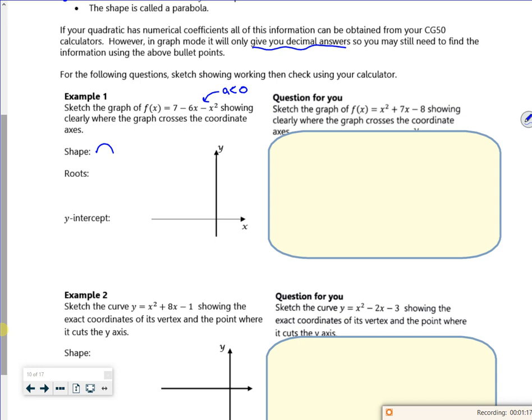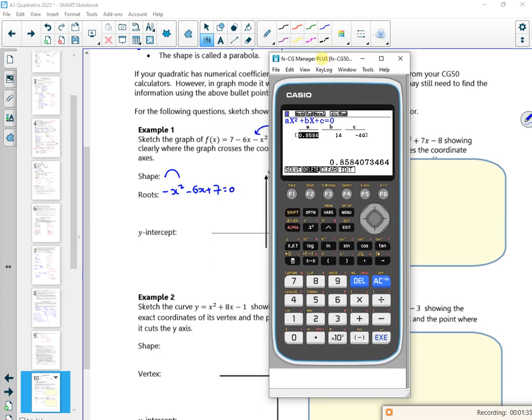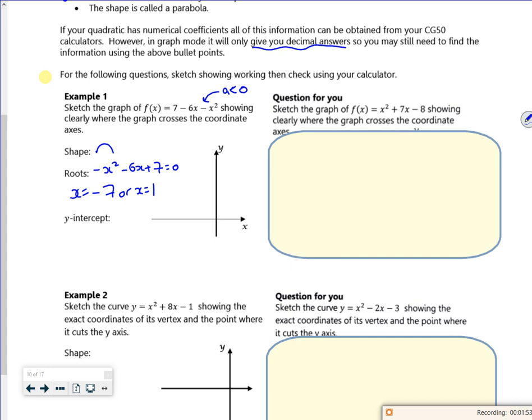In terms of the roots, if I think of it as -x² - 6x + 7 = 0, let's find it on the calculator. So minus 1, minus 6, 7. That gives us roots of 1 and minus 7. So x = -7 or x = 1. The y-intercept, when x is 0, is 7.